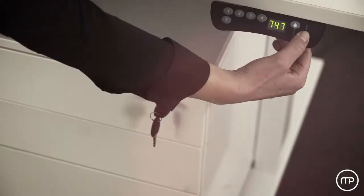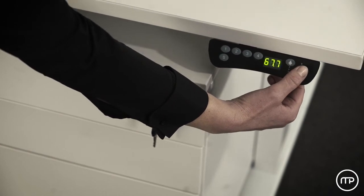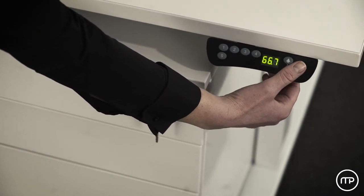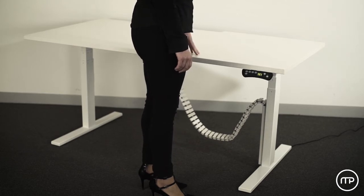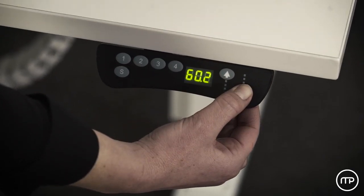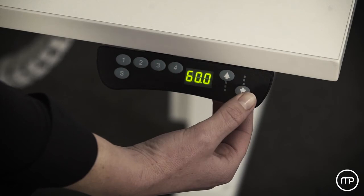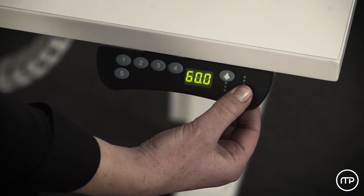Resetting the workstation: Prior to resetting, be mindful to remove any potential obstructions underneath the workstation that may interfere. In the unlikely case that an error occurs with the Ascend workstation, a simple reset may be required. To do so, press and hold the down button until the worktop is at its lowest point. Then press and hold the down button again.